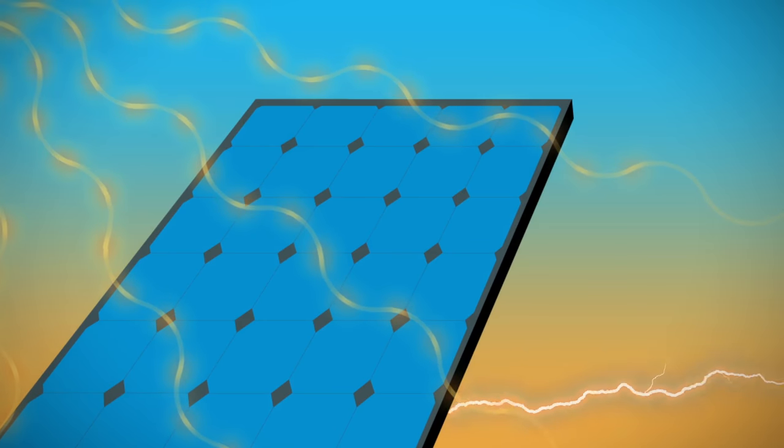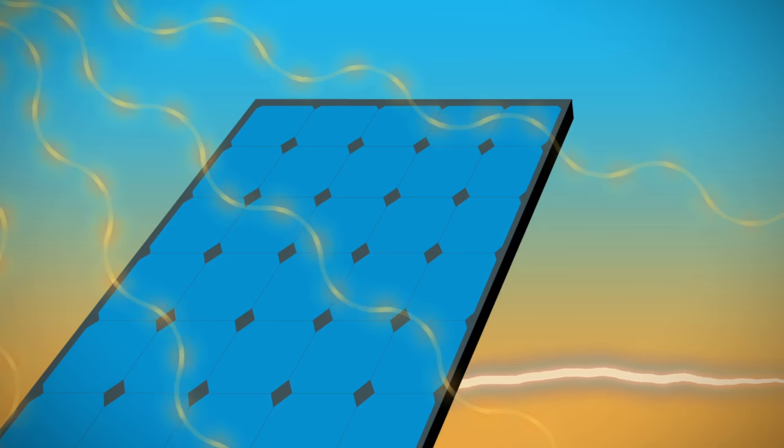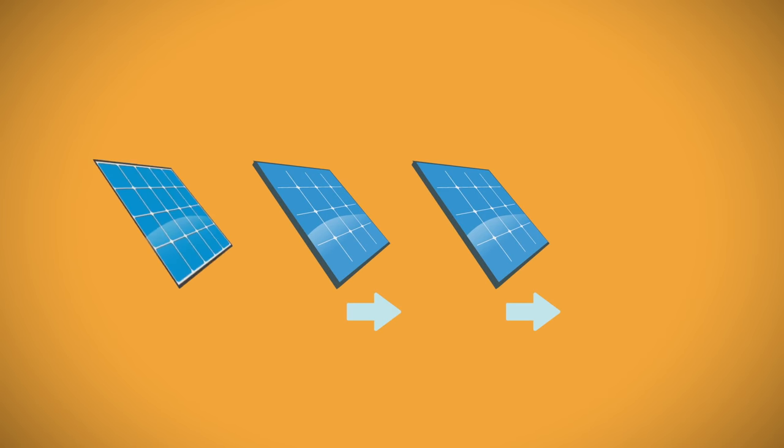Basic PV technology has been around for decades, think calculators, but recent advancements have greatly improved its efficiency and output. Mass PV production has made solar power more affordable, a trend that's likely to continue.